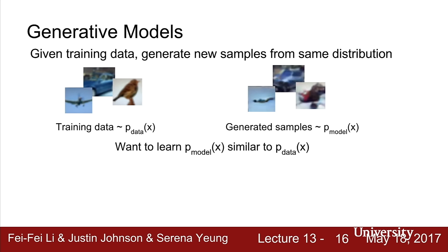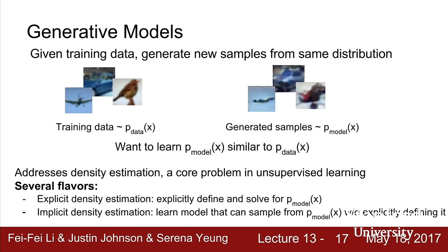Today we'll focus on generative models, a class of models for unsupervised learning where, given training data, our goal is to generate new samples from the same distribution. We have training data generated from some distribution P_data, and we want to learn a model P_model to generate samples from the same distribution. Generative models address density estimation, and there are two flavors: explicit density estimation, where we explicitly define and solve for P_model, and implicit density estimation, where we learn a model that produces samples without explicitly defining it.